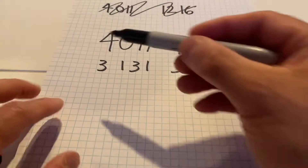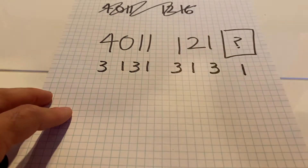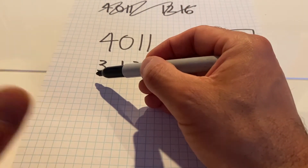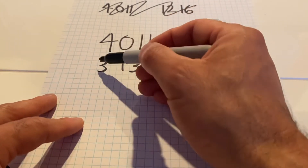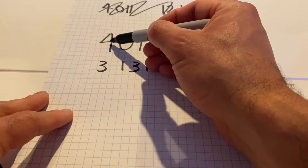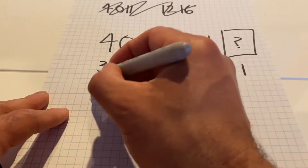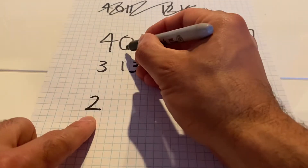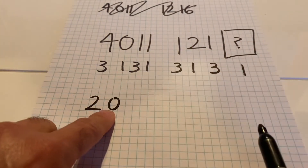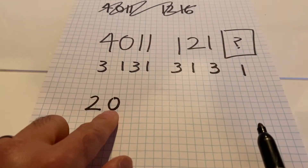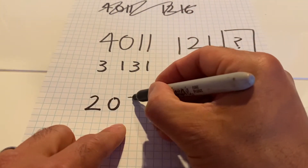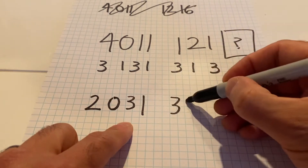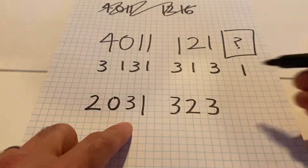From here it's a quick calculation — we go digit by digit. Four times three is 12; we don't care about the tens, we just care about the singles digit, so four times three is just two for the sake of this algorithm. Zero times one is zero — you can even skip writing the zero. One times three is three. One times one is one. One times three is three. Two times one is two. One times three is three. And of course the check digit goes here.